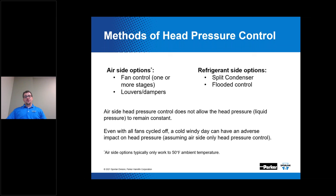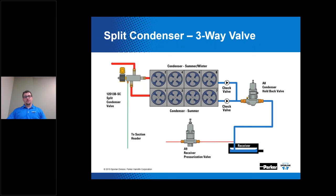Now we'll discuss the different methods of head pressure control, which include air side and refrigerant side options. Air side options consist of fan control using VFDs or cycling fans on and off in stages — airflow across the condenser being one of the three factors that affect condenser capacity. Refrigerant side options consist of splitting the condenser or flooding of the condenser. Air side head pressure control does not allow the head pressure or liquid pressure to remain constant during varying low ambient temperatures.